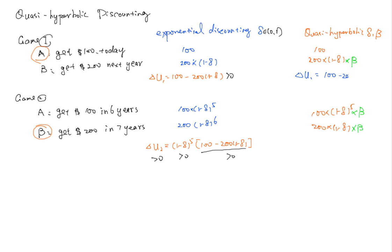Now so let's look at the difference. So now the U1 is going to be a discounting and delta U1 is 100 minus 1 minus delta beta. And now delta U2 is again subtracting the common factor.